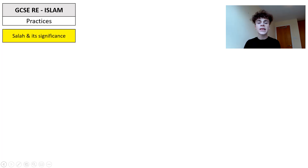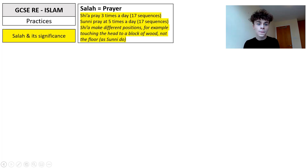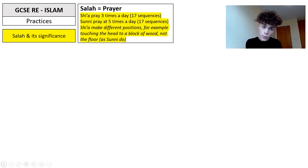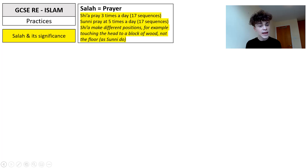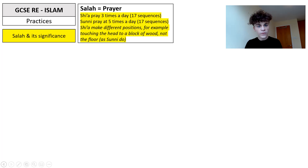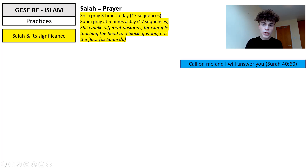The first practice we're going to talk about is Salah, which is prayer. Shia Muslims pray three times a day — a total of 17 sequences. Sunni Muslims pray five times a day, also totalling 17 sequences. A key difference is that Shia make different positions — for example, touching the head to a block of wood rather than to the floor as Sunnis do. Key quotes about prayer: Surah 40 says 'call on me and I will answer you.' Surah 62 says 'remember God often so that you may prosper,' emphasizing the importance of regular prayer throughout the day.